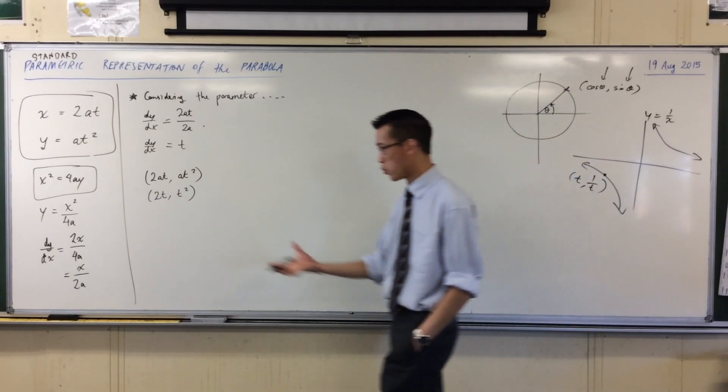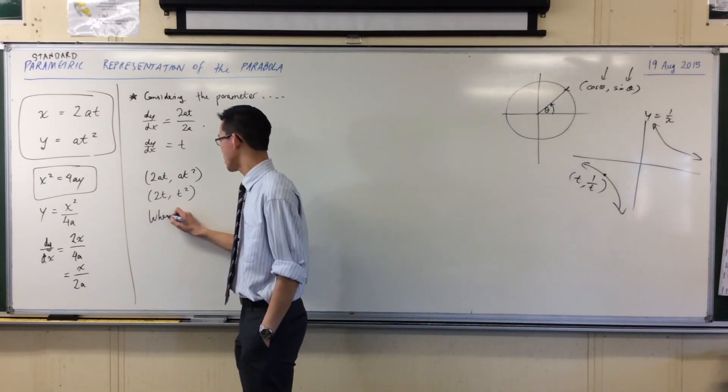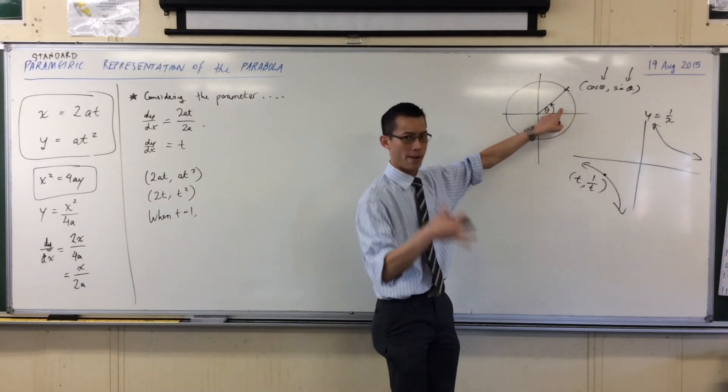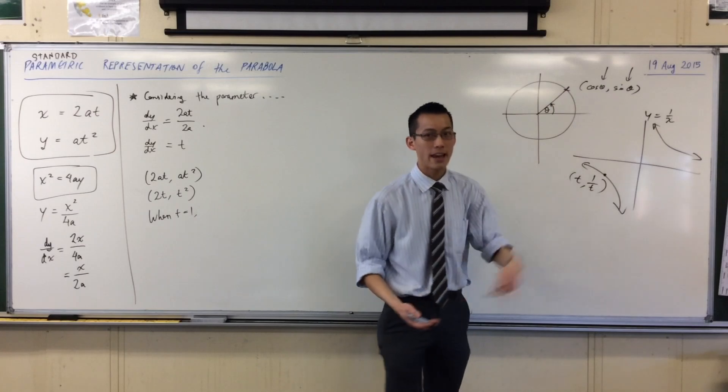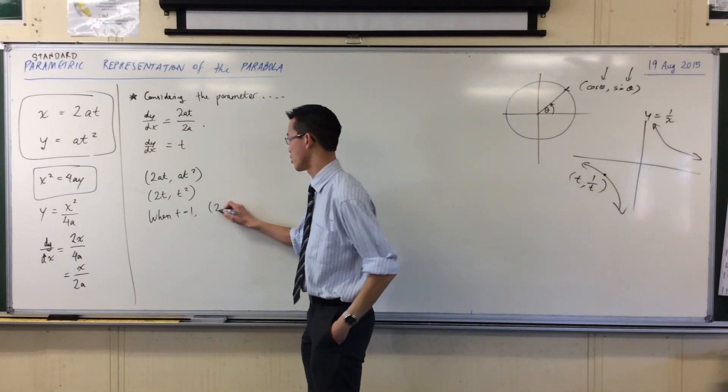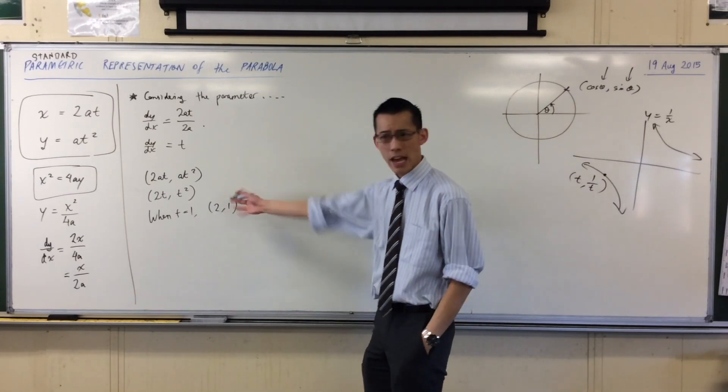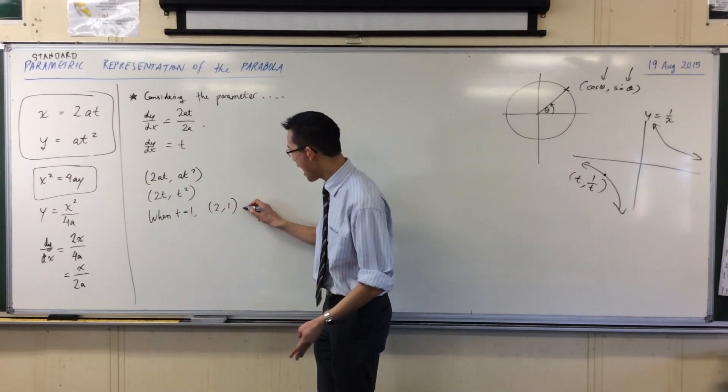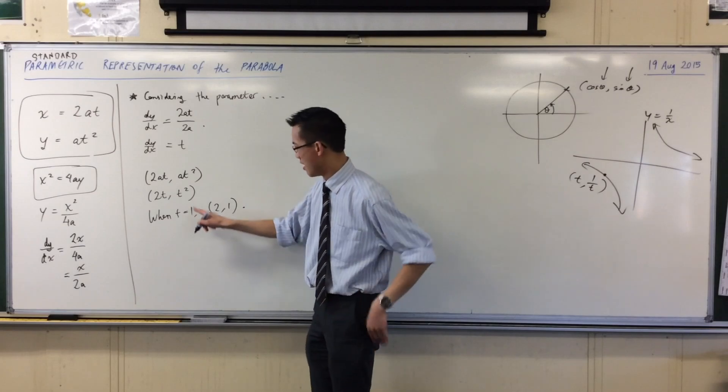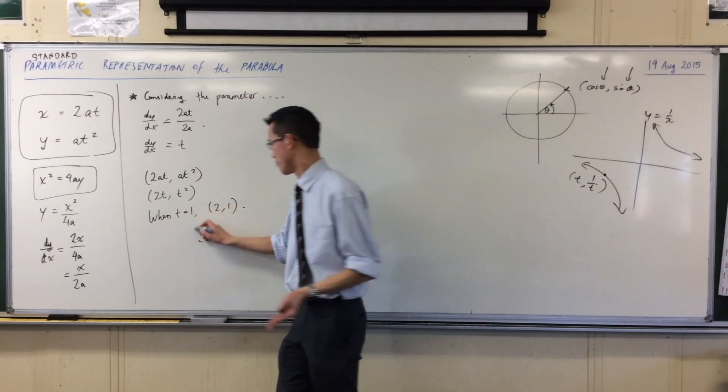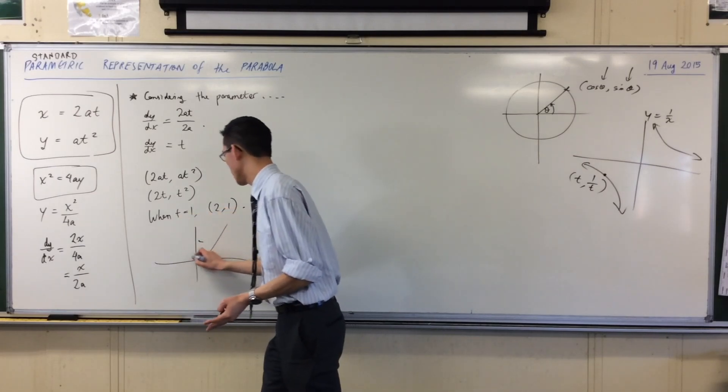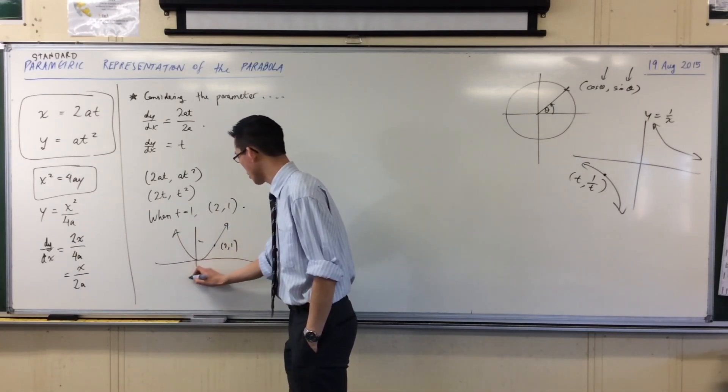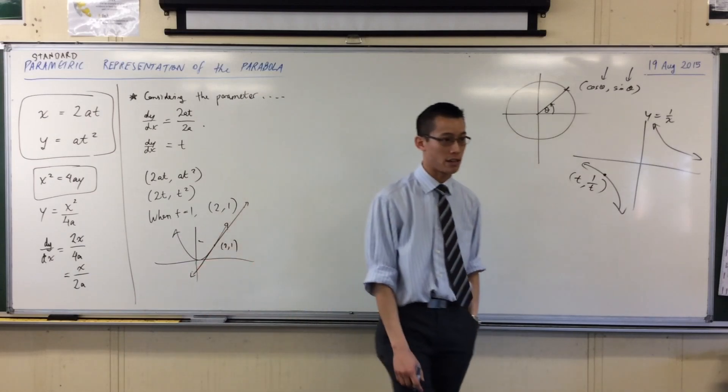So, if I say t equals 1 for this parabola, when t equals 1, where am I? In the same way that when I say, you know, when theta equals 30 degrees, where am I? The x and y coordinates are just going to be 2, 1. Have I just substituted correctly? Yes, I have. So, therefore, what this says is, at 2, 1, the parameter, the gradient, is 1. That makes sense. Here is x squared equals 4y. 2, 1 is somewhere about there, and sure enough, if I were to draw that tangent, it ought to have a gradient of 1.